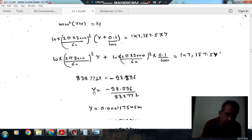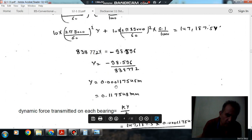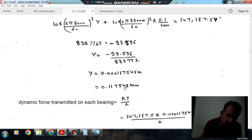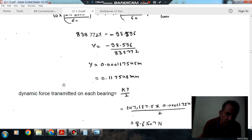Solving this, we have Y = 0.000117548 m. This is your steady state amplitude, or you can say deflection of the shaft. Due to this steady state amplitude or deflection of the shaft...